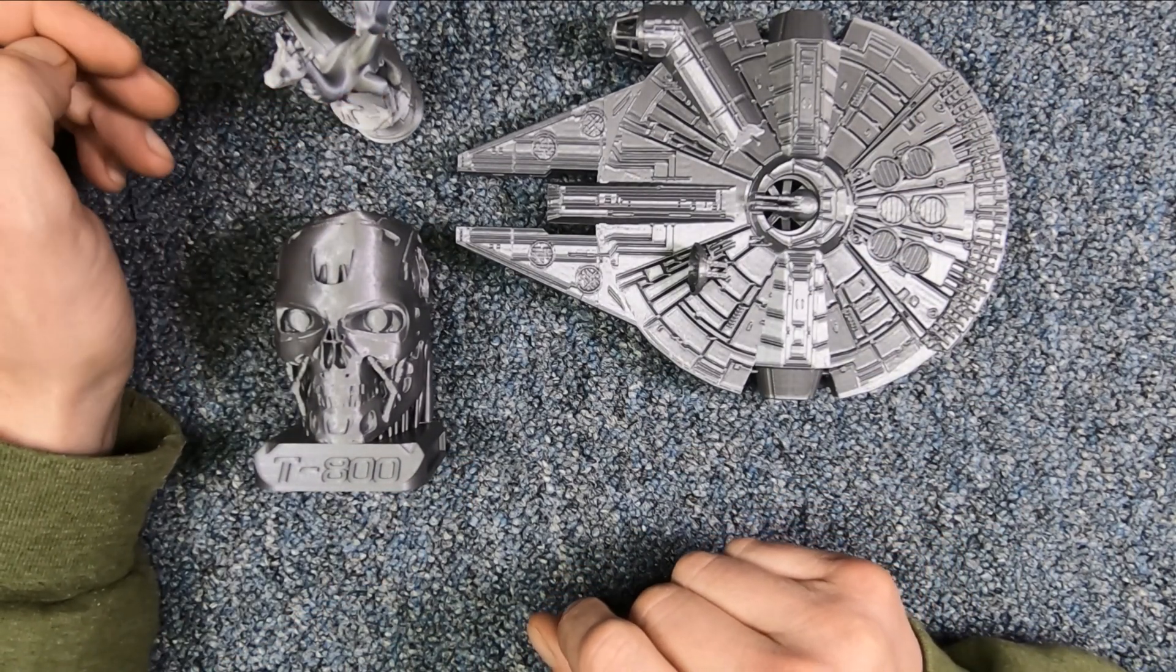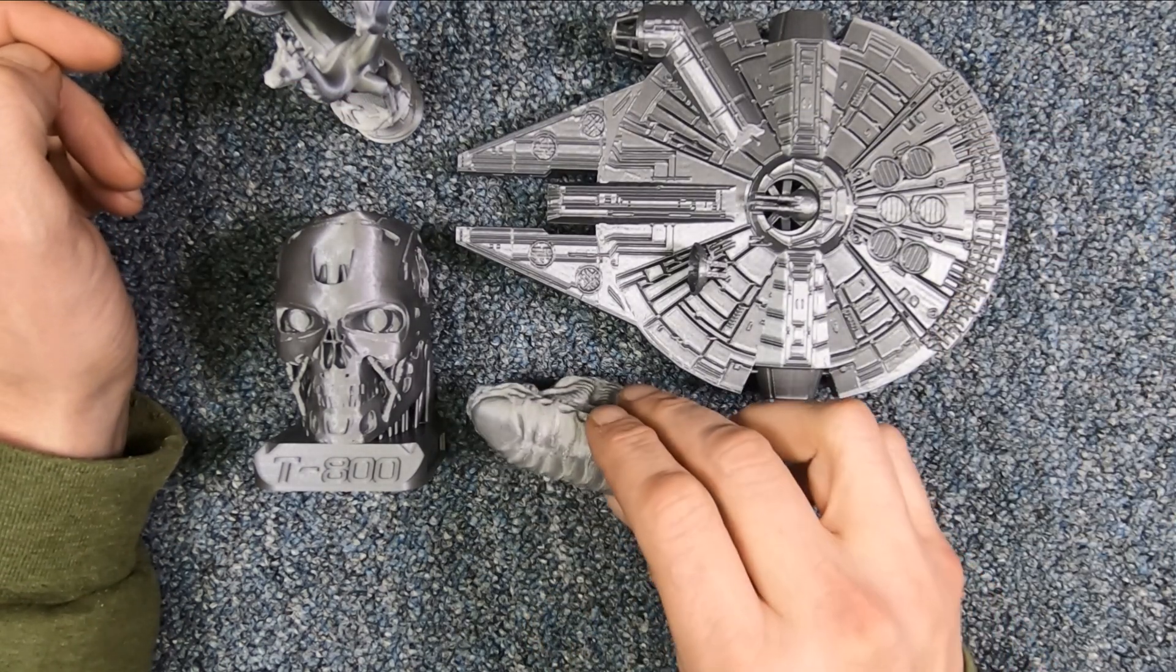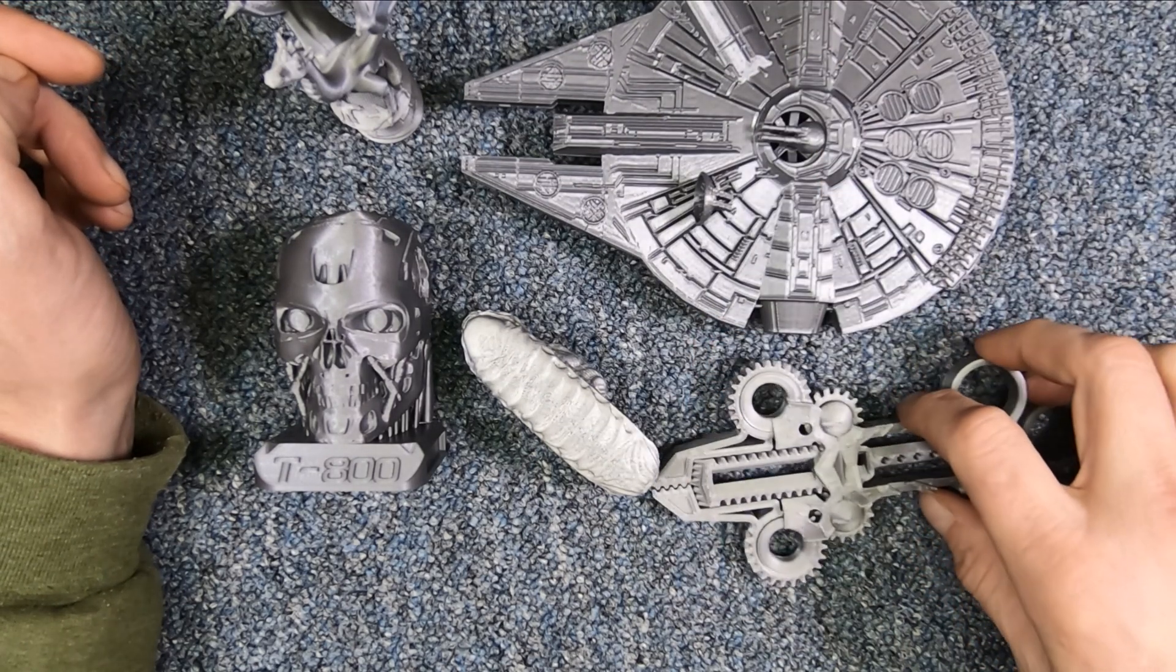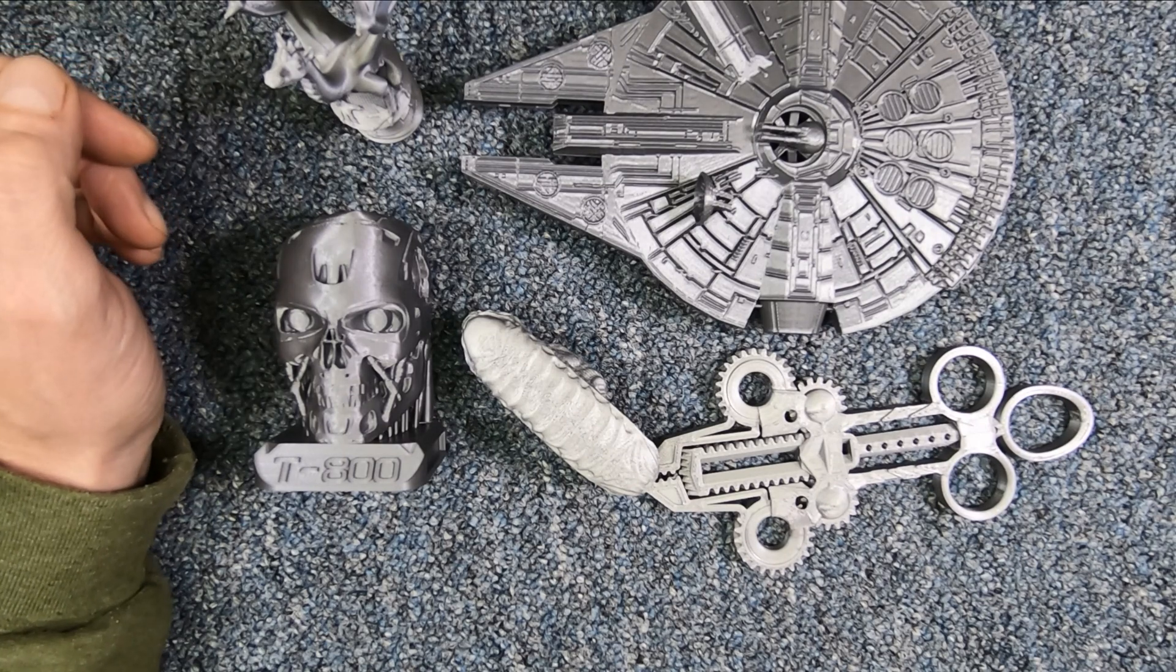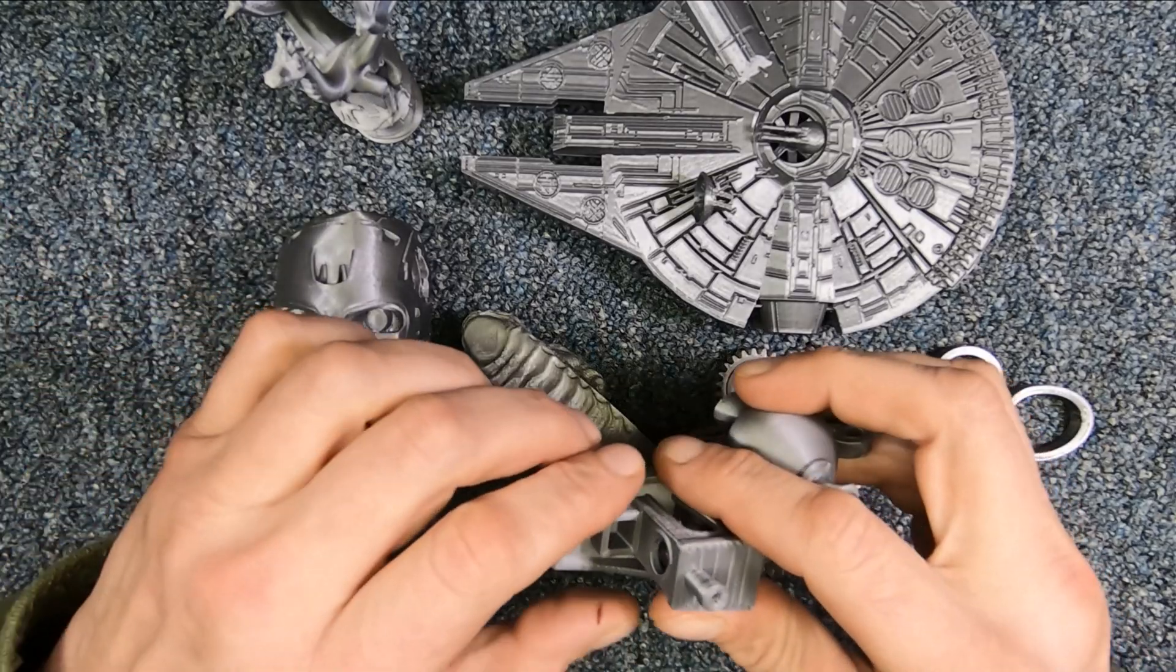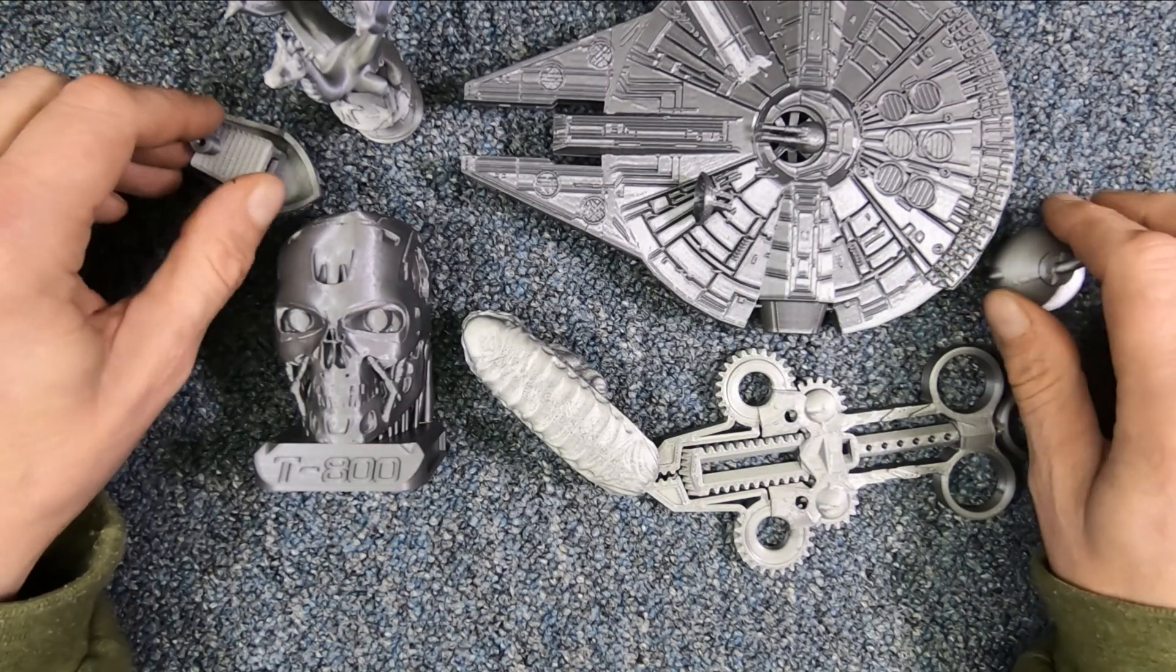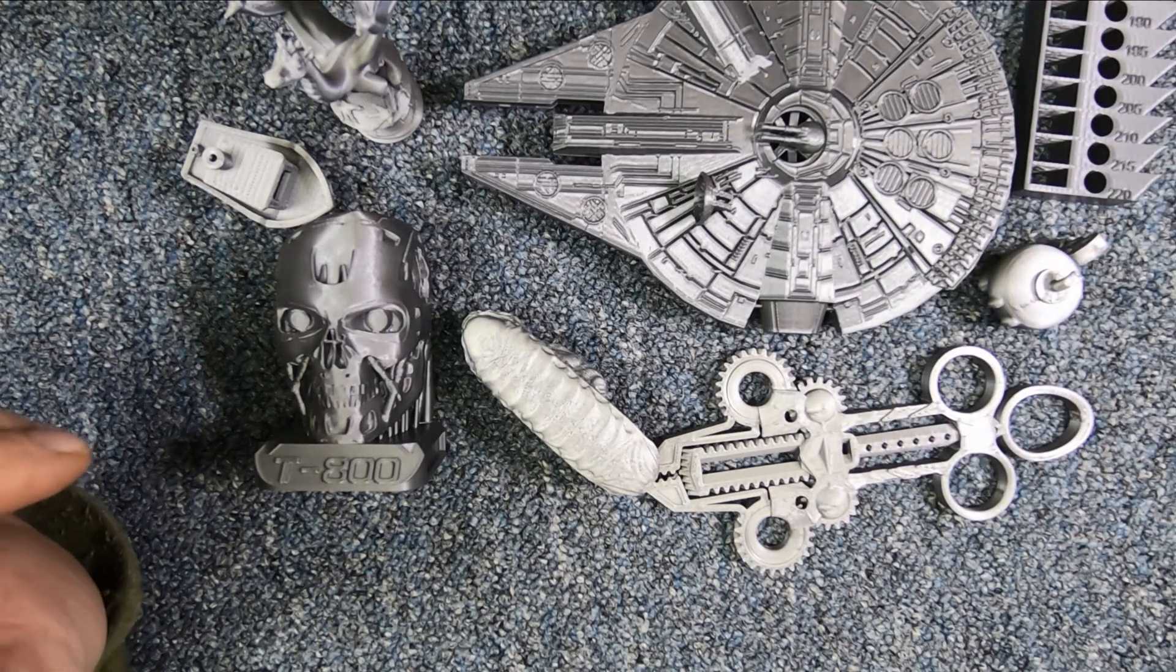You can find it on Amazon. There will be an affiliate link in the description below if you would like to go over and check out what the current price is of it. They do generally have this in stock. I checked over the past week or two since I had originally got the filament. And it took me a few days to print all this stuff. They still had it in stock. And I actually ordered another spool because I printed out a good portion of the spool making all these models for this product review.